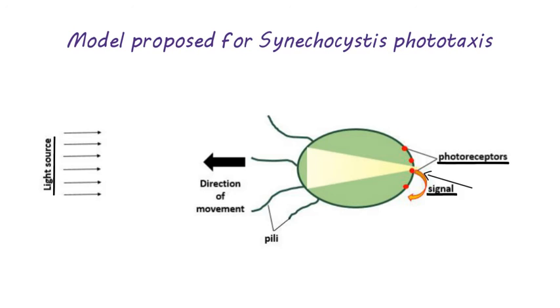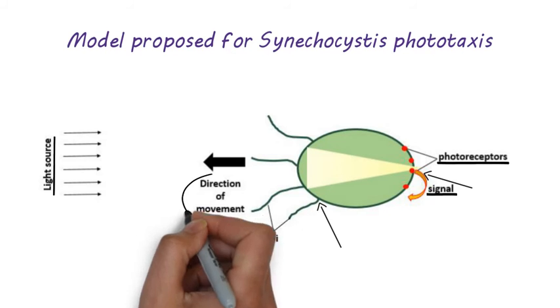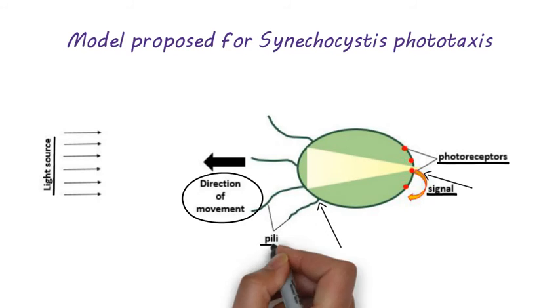Thus, the motility apparatus assembles at the side facing the light and the cell moves towards the light by a retraction movement of the pili.